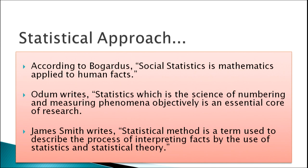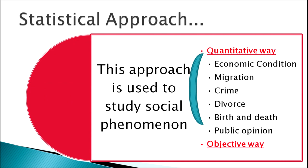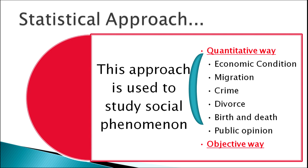The next method used in sociology is the statistical approach. According to Bogadas, social statistics is mathematics applied to human facts. Odom writes that statistics — the science of numbering and measuring phenomena objectively — is an essential core of research. James Smith writes that the statistical method is a term used to describe the process of interpreting facts by the use of statistics and statistical theory. This approach is used to study social phenomena in two ways: quantitatively and objectively — through which we can study economic conditions, migration, crime, divorce, birth and death, and public opinion.